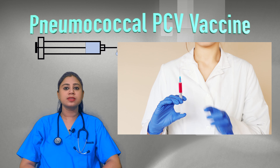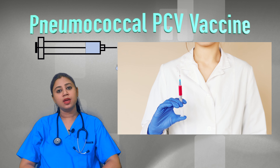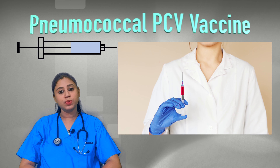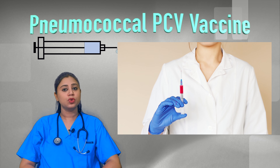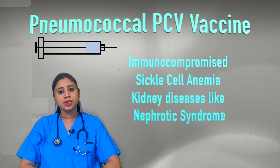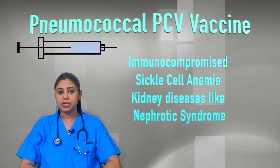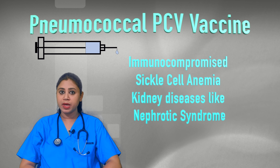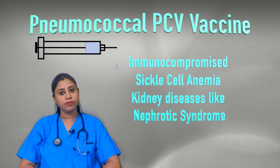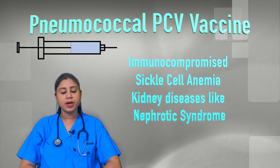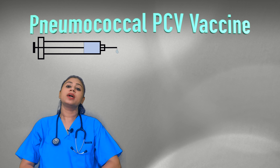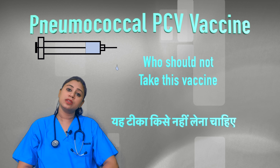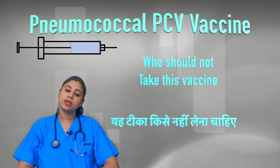Children with certain medical conditions also especially need this vaccine. If a child has an immunocompromising condition such as HIV infection, sickle cell anemia, kidney disease, or nephrotic syndrome, the Pneumococcal Vaccine is very important for them.